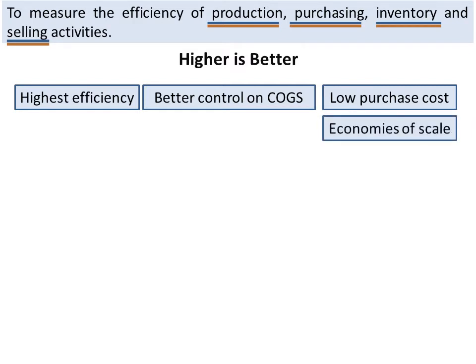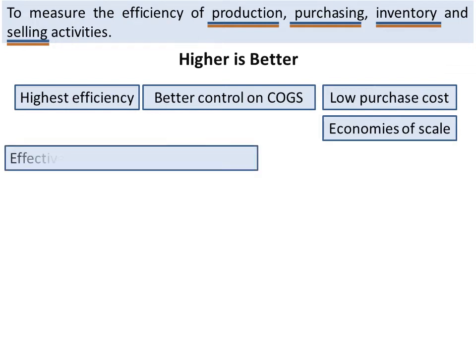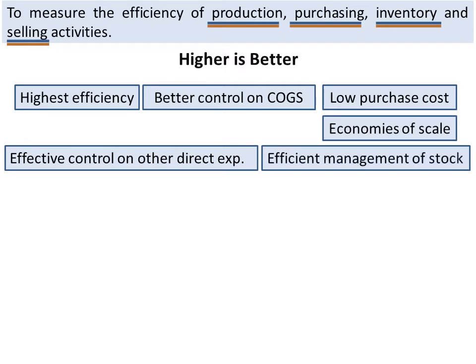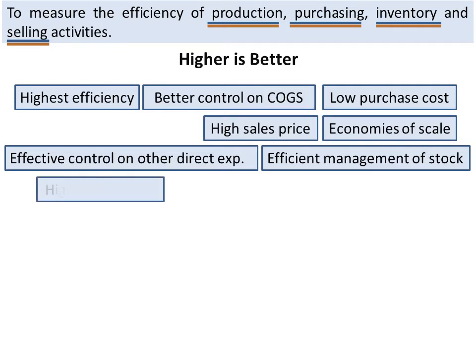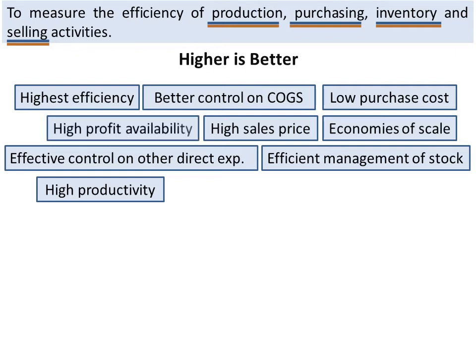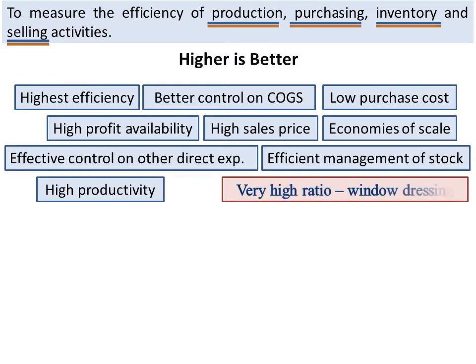That is, the firm is saving cost with an increased level of production, has effectively controlled its other direct expenses, and is efficiently managing its stock level. Higher ratio also suggests that the firm is able to get a higher selling price per unit due to more demand in the market. It shows maximum productivity, indicating the firm's ability to produce more from the available input by keeping control on cost. It displays high profit availability to meet other expenses. But if the ratio is very high, it may also be the result of window dressing.